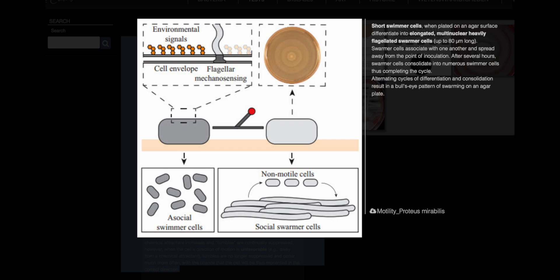Poem on motility of Proteus mirabilis. On agar stage, a dance takes flight. Proteus mirabilis, a wondrous sight. From swimmer cells, so small and tame, to swarmers grand, a shape they reclaim. Elongated forms, with flagella's grace,